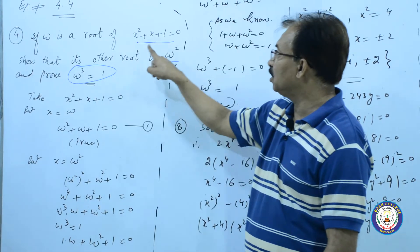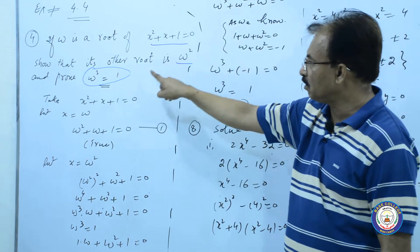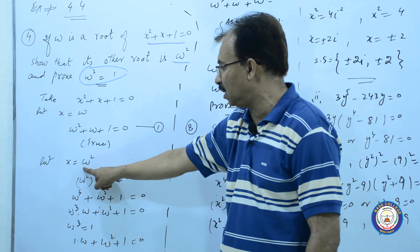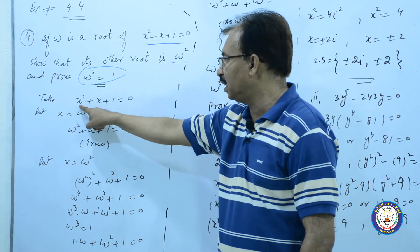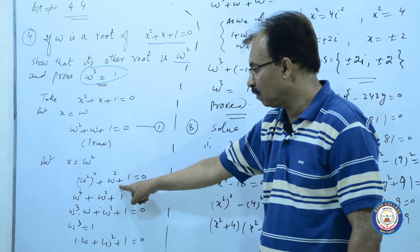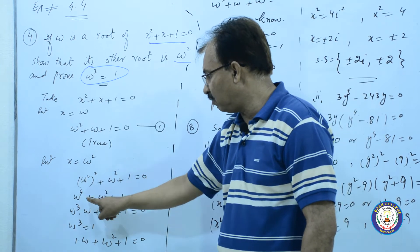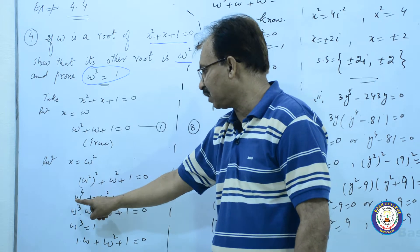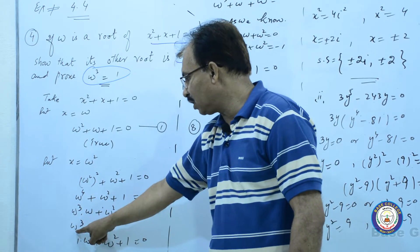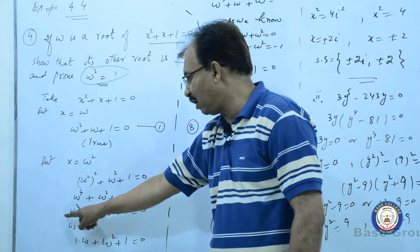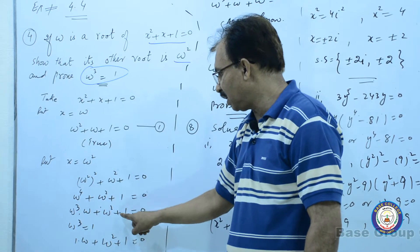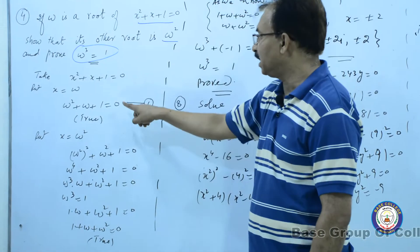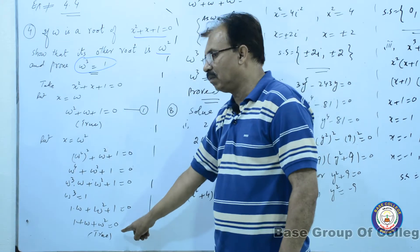اب مجھے show کرنا ہے کہ omega square is the root۔ تو اس quadratic equation میں میں نے x کی جگہ omega square place کیا۔ omega square to square plus omega square plus one بن گئی، یعنی omega four plus omega square plus one is equal to zero۔ omega four کو ہم express کر سکتے ہیں omega cube into omega کے طور پر، اور omega cube is equal to one ہوتا ہے، تو one into omega plus omega square plus one یعنی one plus omega plus omega square is equal to zero۔ دوبارہ یہی situation produce ہوئی، اس کا مطلب یہ true ہو گئی۔